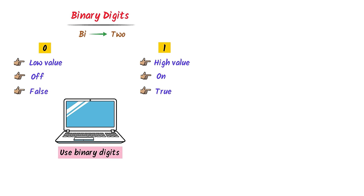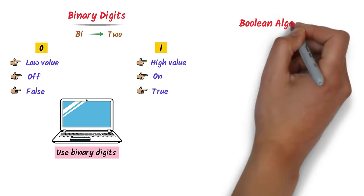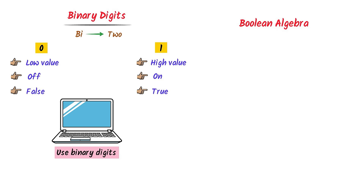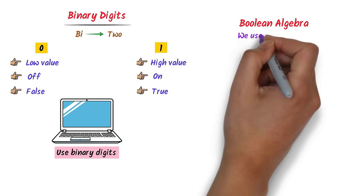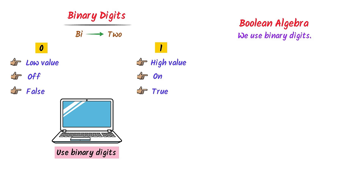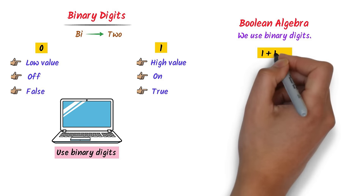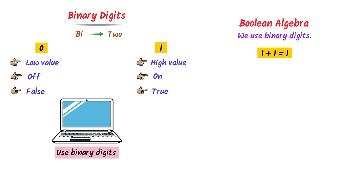I will teach you the basic concept of Boolean algebra in one statement. In Boolean algebra, we use binary digits and 1 plus 1 is equal to 1, because there is no other digit beyond 1.